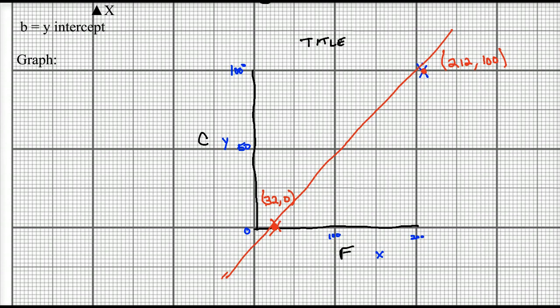So very simply, we know that y equals mx plus b. So y, of course, we're going to use as F. So Fahrenheit is equal to, well, now what is this m? M is slope.